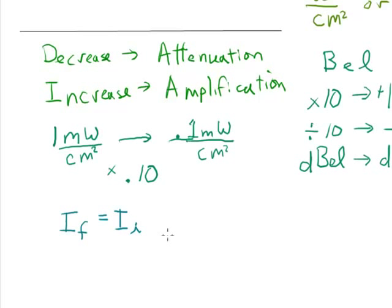If we want to calculate some final intensity, if we have an initial intensity of some value and multiply that by 10 raised to the power of the amount of the decibel change divided by 10, that's going to equal our final intensity.